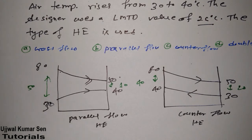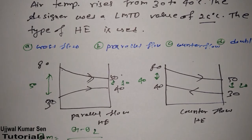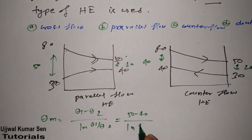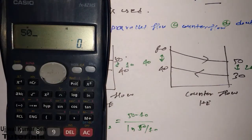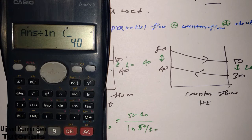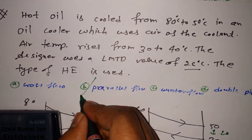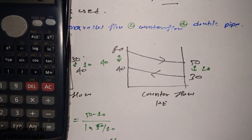Now we find LMTD for the parallel flow heat exchanger. The formula is: theta_m equals (theta 1 minus theta 2) divided by the natural log of (theta 1 by theta 2). Substituting: (50 minus 10) divided by natural log(50/10) equals 40 divided by ln(5). Using a calculator, this gives approximately 24.85 degrees centigrade. So parallel flow is not the option for the designer.